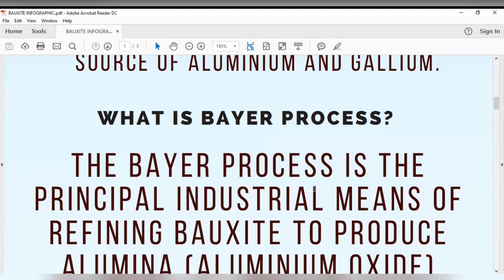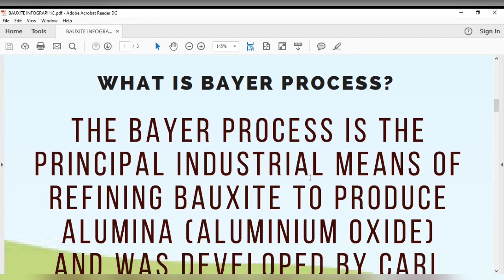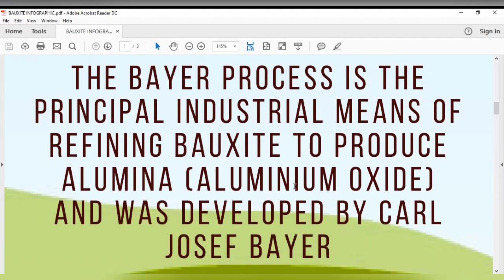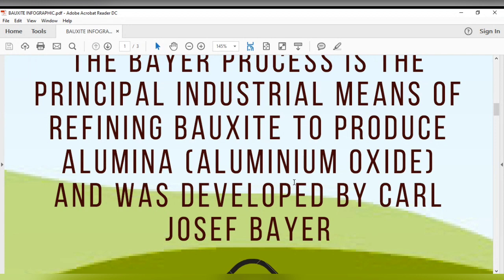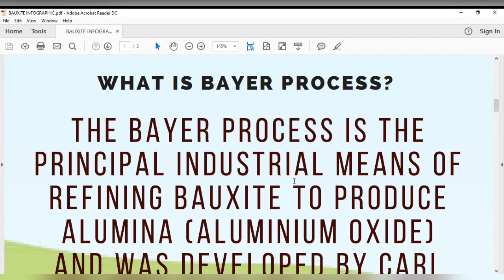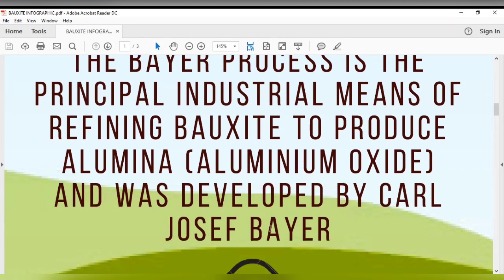The Bayer process is a principal industrial means of refining bauxite in order to produce alumina, or aluminum oxide, and was developed by Carl Joseph Bayer, which is why this process is called the Bayer process. In simpler words, it means we must do the process to get the aluminum out inside of the bauxite. That's all for the introduction.